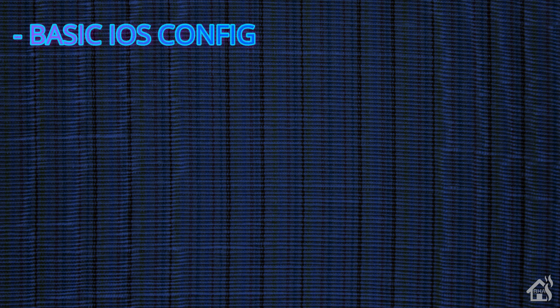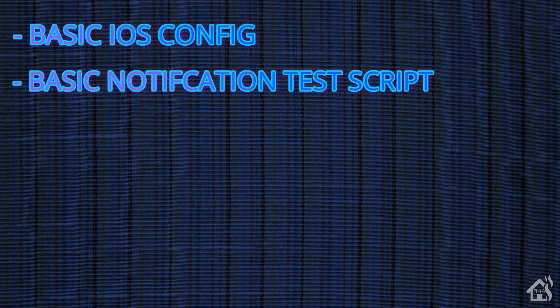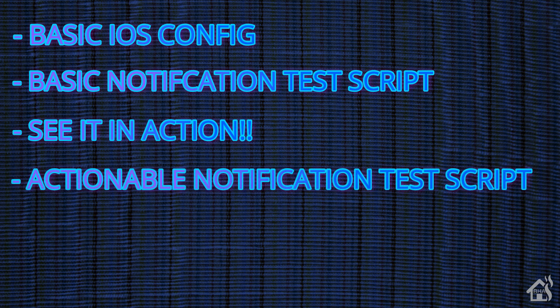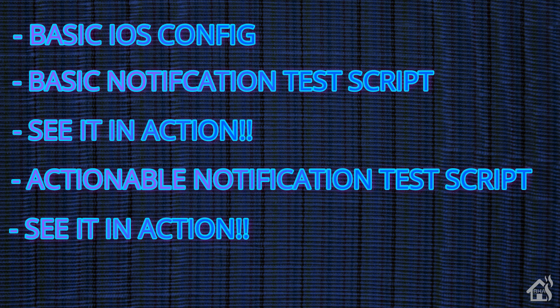Let's do a quick run-through of everything we covered. We went over the basic iOS configuration for Home Assistant, getting your device communicating properly. Then we created a basic notification test script to send a message to our iOS device and showed what that looked like in action. After that, we went through the whole setup for an actionable notification — a bit more involved than a regular notification — and showed what that looked like in action too. It's a lengthy video because there's a lot to the actionable notifications, but once you get it going it runs pretty smooth.